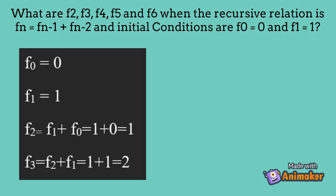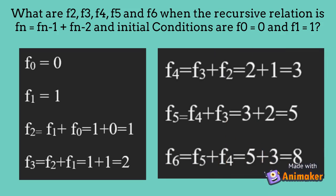F3 equals to F2 plus F1, which is 1 plus 1, and the answer is 2. F4 equals to F3 plus F2, which is 2 plus 1, and the answer is 3. F5 equals to F4 plus F3, which is 3 plus 2, and the answer is 5. Lastly, F6 equals to F5 plus F4, which is 5 plus 3, and the answer is 8.